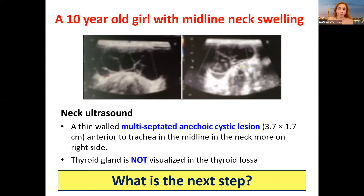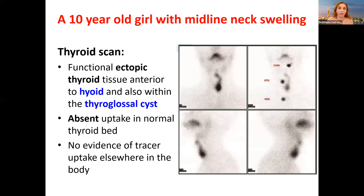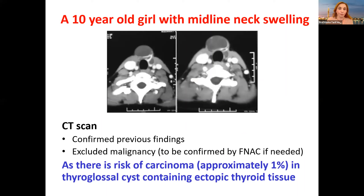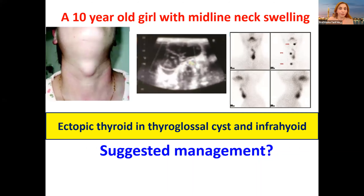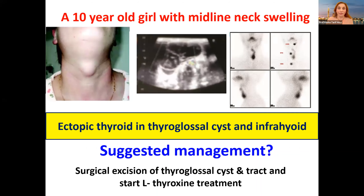Anytime we cannot visualize the thyroid gland in place, we have to do a thyroid scan. We found ectopic thyroid in the thyroglossal cyst, with absent uptake at the normal thyroid bed — confirmed by CT, done because there is a risk of carcinoma (very low, about 1%) in thyroglossal cysts containing ectopic thyroid. This is a rare association: ectopic thyroid in a thyroglossal cyst, infrahyoid location.